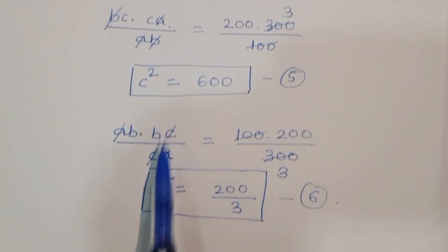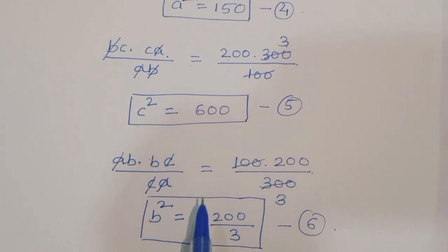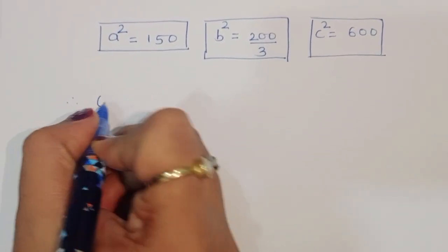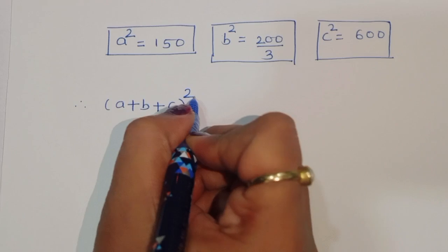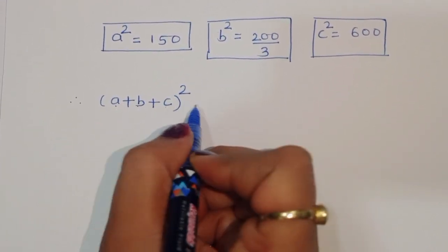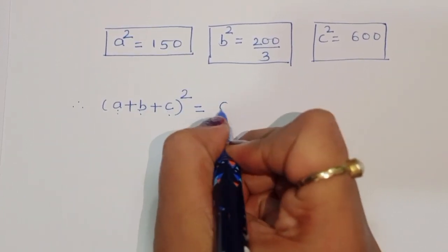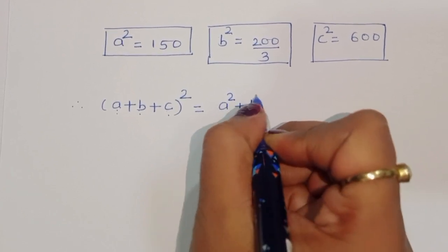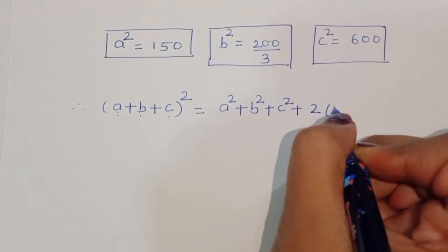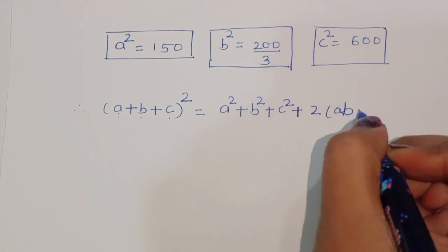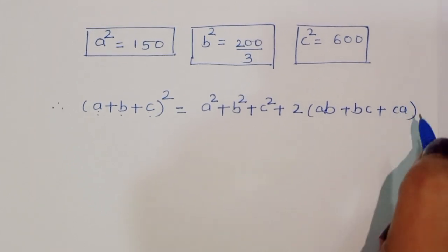Now we have to find out the value of A plus B plus C. We are taking the term (A plus B plus C) squared. A plus B plus C squared is equal to A squared plus B squared plus C squared plus 2 times (AB plus BC plus CA). This is the formula. Now we can substitute the values here.